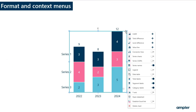On right-click on your mouse, you'll find the context menu. In the context menu, you'll be able to add different decorators to your chart. In the top part, you'll find CAGRs, total difference, level difference, and value lines, all of which have a plus sign. The plus sign indicates that several of these types can be added to your charts.